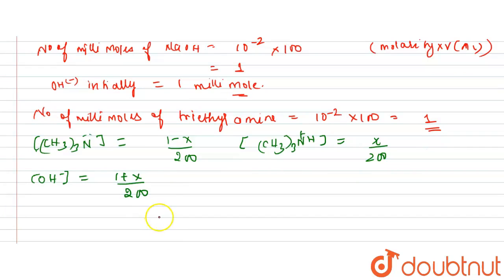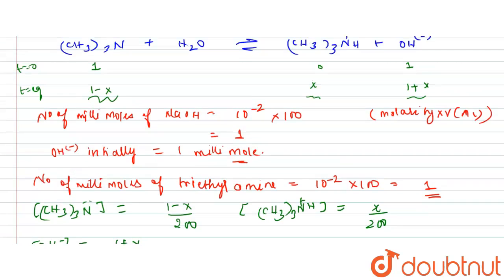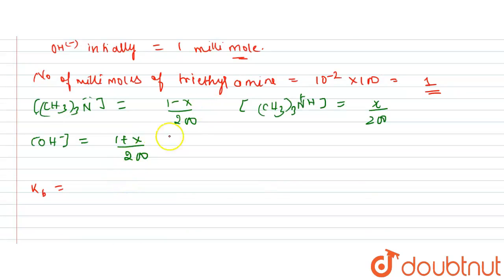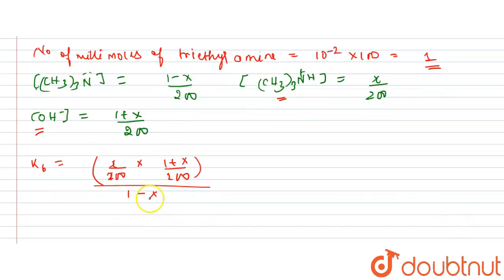Now writing the Kb expression: Kb = [(CH₃)₃NH⁺][OH⁻] / [(CH₃)₃N] = (x/200) × ((1 + x)/200) / ((1 − x)/200). The two 200s in numerator cancel with one in denominator, giving Kb = x(1 + x) / (200(1 − x)).